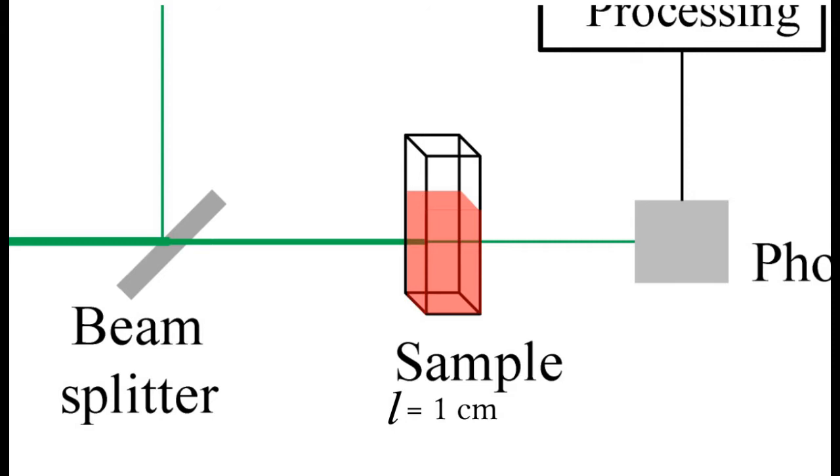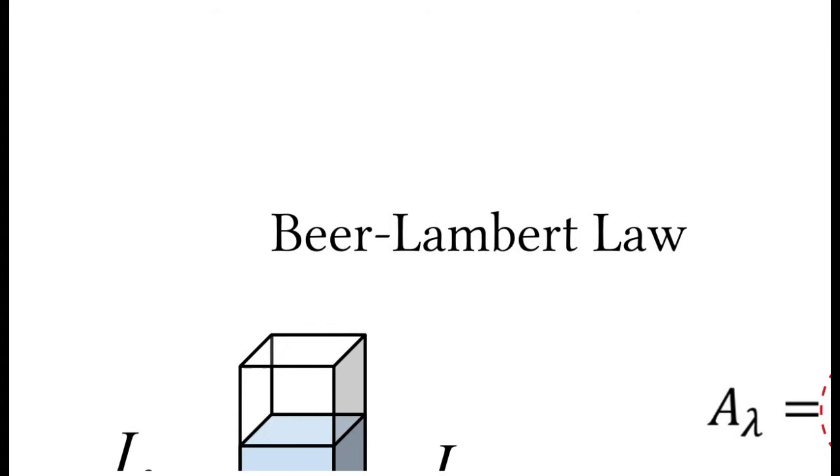For working with visible light, one can use cuvettes made out of glass or plastic, but both these materials absorb UV light. Therefore, for measuring absorbance from DNA, one has to use a quartz cuvette. So once you have the path length and absorbance values, how do you determine the exact concentration of the sample?